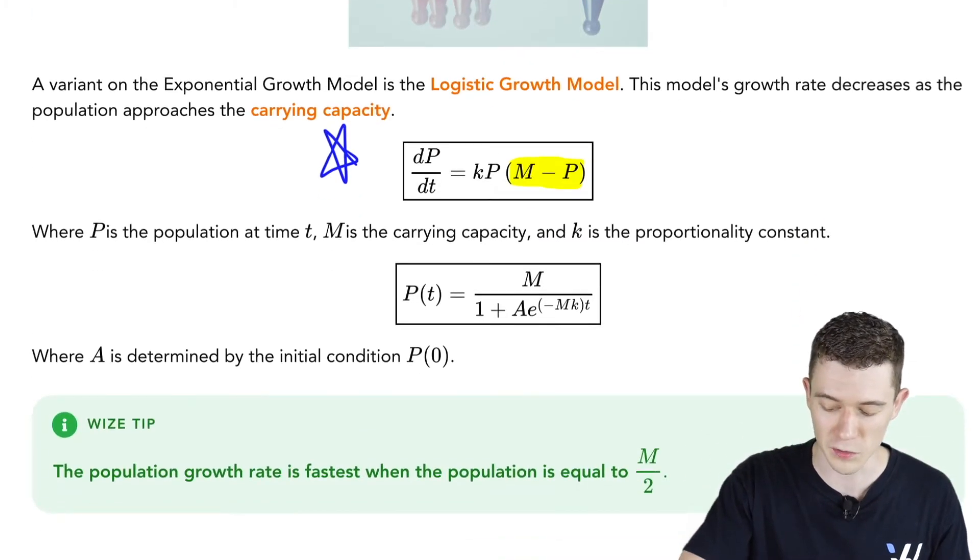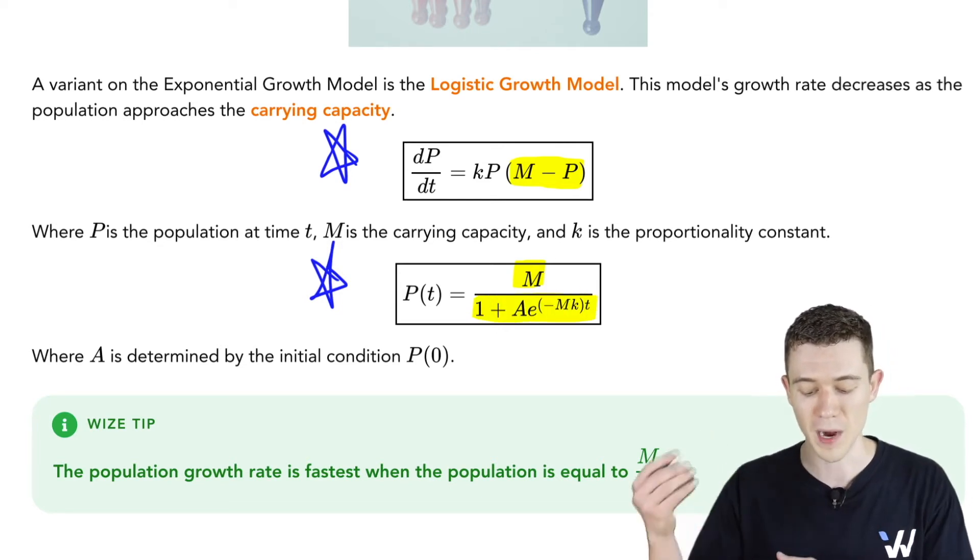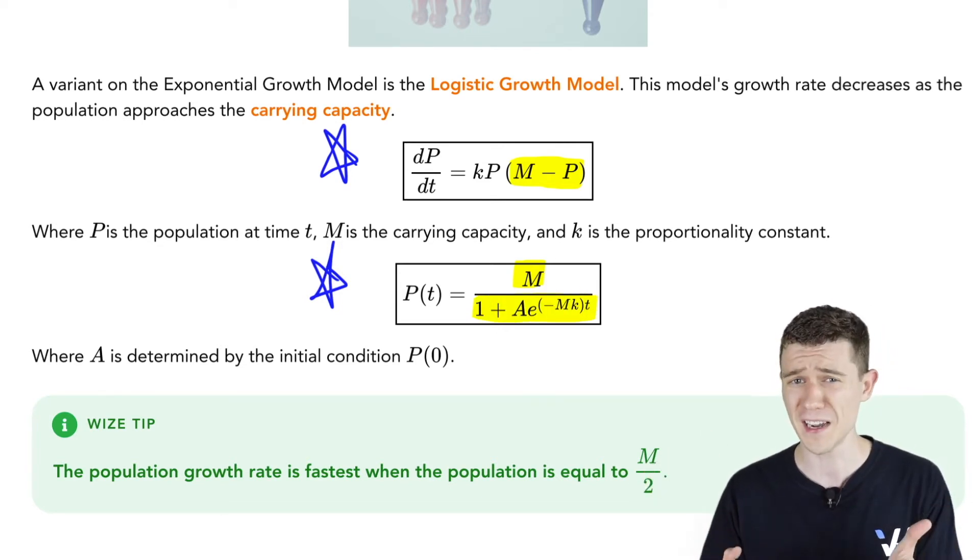It's a bit more cumbersome of a differential equation, and has a bit more cumbersome of a solution. You'll see it right here. The population at time t equals M, the carrying capacity, over 1 plus Ae^(-Mkt). It doesn't exactly roll off the tongue.